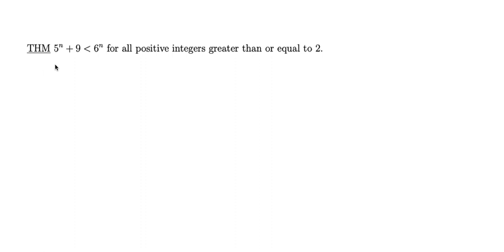This is an example of an induction proof where the theorem involves an inequality. For the most part, this induction proof's steps will be exactly the same as in every other proof, but there's one detail that's a little different. My theorem states that 5 to the n plus 9 is less than 6 to the n for all positive integers greater than or equal to 2.